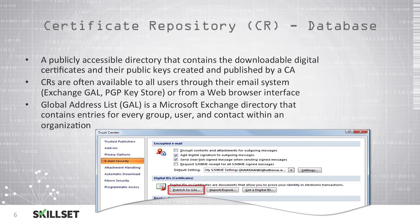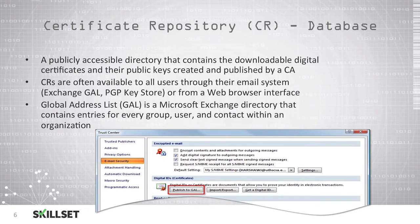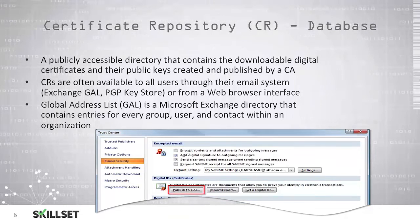The certificate repository is typically available to users through their email system, such as the Exchange global address list, a PGP key store, or a web browser interface. This allows users to look up other users' public keys so they can encrypt data using the recipient's public key before sending it to them.